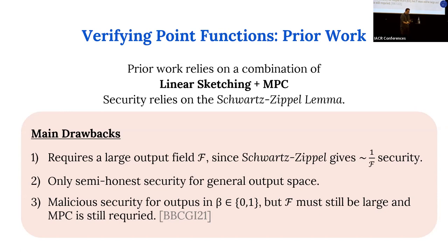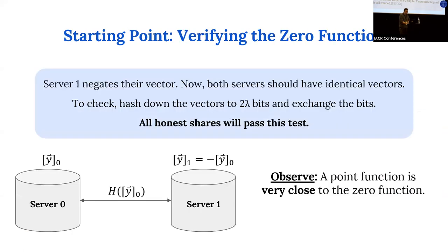The Schwartz-Zippel lemma limits the technique because it relies on having a very large output field — you can really only get an output field of size 2^lambda. Prior works only achieve semi-honest security for a general output space. The work of Bonnet, Boyle, Corrigan-Gibbs, Gilboa, and Ishai achieves malicious security when valid betas are zero or one, but you still have to share binary values over a large field. All these works require public key operations and NPCs.